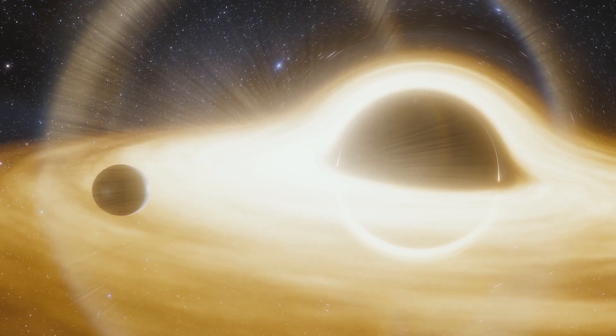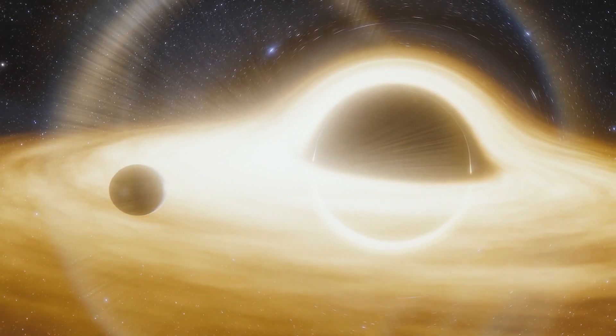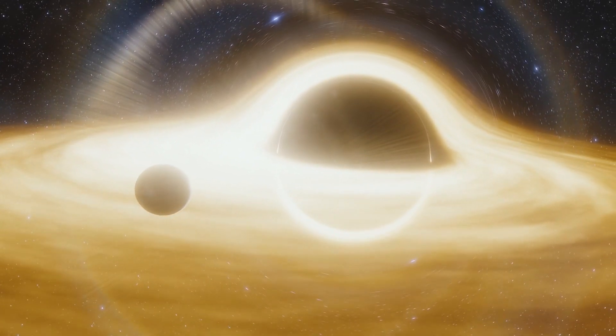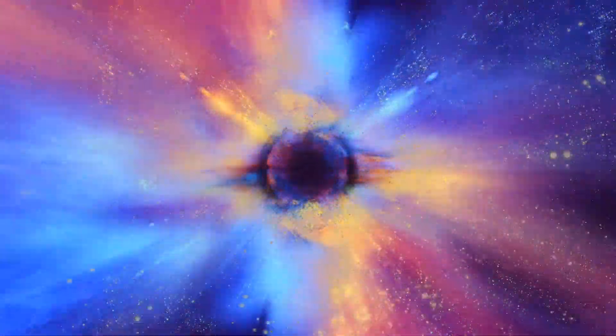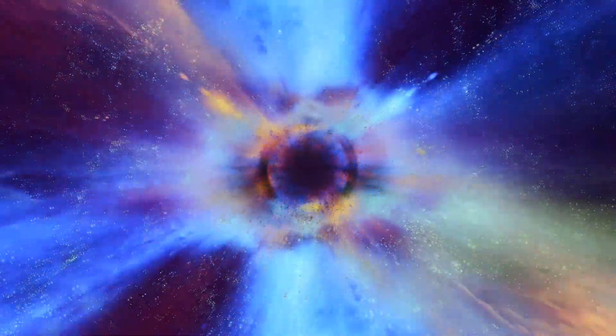Imagine a place where gravity is so strong that not even light can escape. That's a black hole. They're like cosmic vacuums, sucking in everything around them. Even though we can't see them, we know they're there because of their effects on nearby stars and matter.